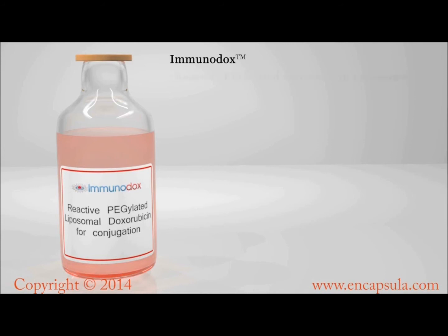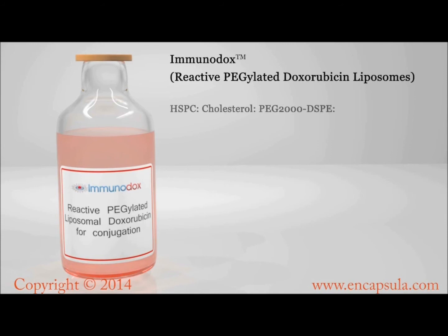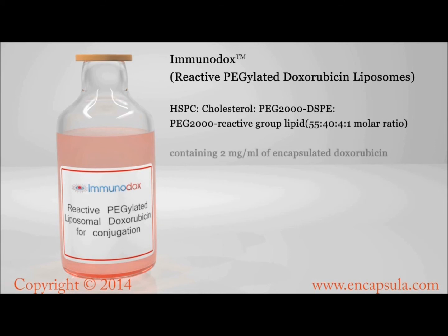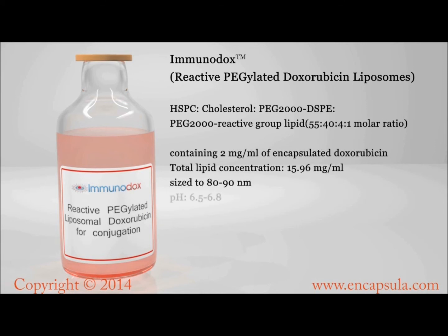Pegylated immunodox is made in the same way with one significant difference: immunodox contains a reactive moiety attached to the end of the PEG chain of the lipid, making up to 1 mole percent.